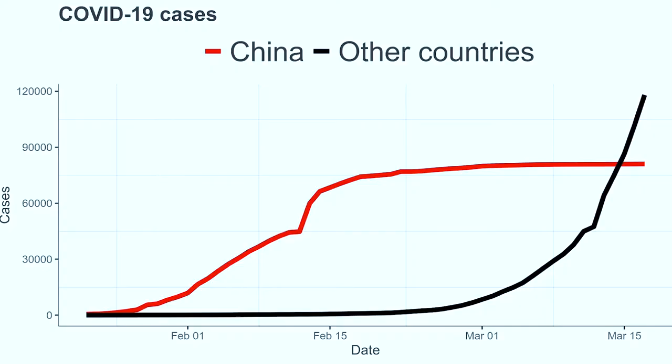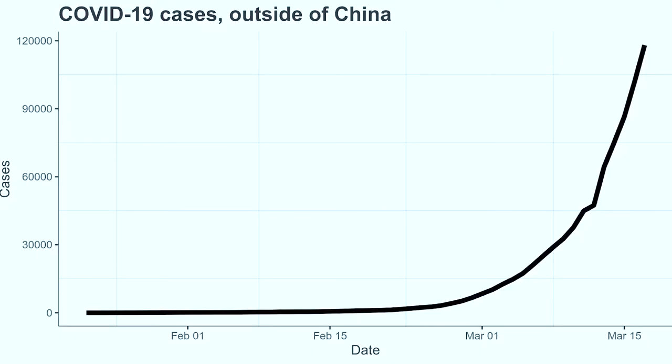But growth is not uniform across countries. In China, there have only been a few hundred cases in the last week. But in the rest of the world, outside of China, we've gone from 30,000 cases to about 140,000 cases — that's a more than 400% increase in only 10 days.